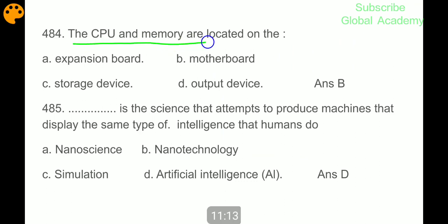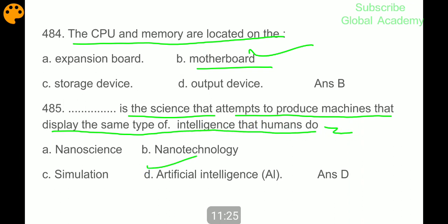The CPU and the memory are located on the motherboard. Artificial intelligence is the science that attempts to produce machines that display the same type of intelligence that humans do.